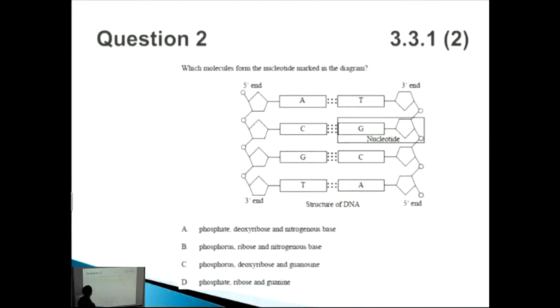Let's look at this one. Which molecules form the nucleotide marked in the diagram? So we've got the nucleotide here and the question is what molecules form it. So you need to know about your basic chemical and molecular structures here, and you know that this is a double-stranded form of DNA. DNA stands for deoxyribonucleic acid, and the first thing that you know is that this one is a ribose or a deoxyribose. So an oxygen has been taken out compared to the normal ribose. This one here is a phosphate.